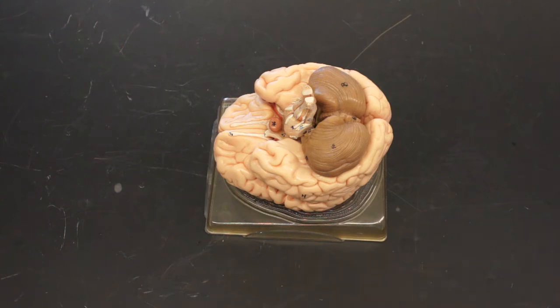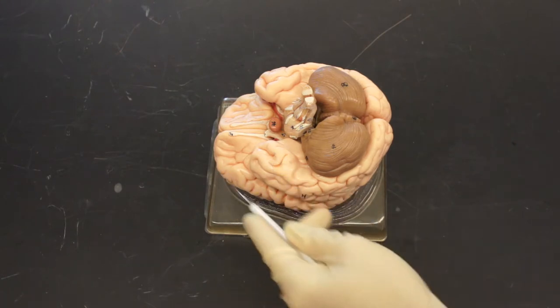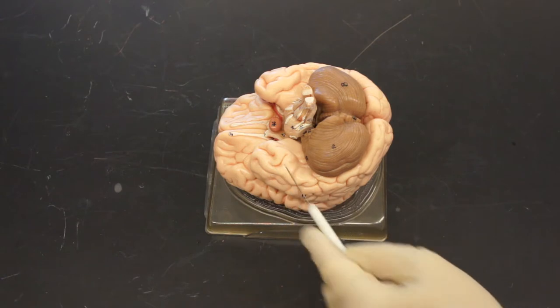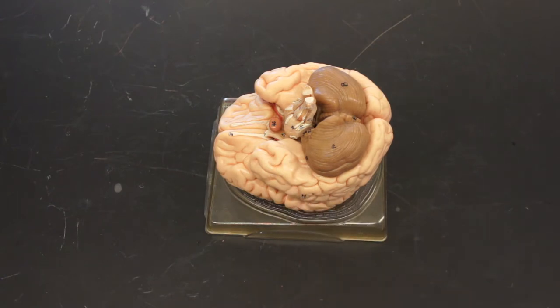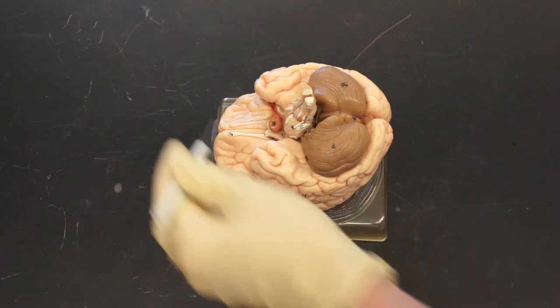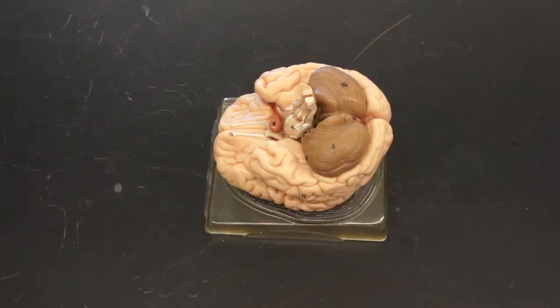Here we have a model of the brain, and we can see some bumps. Those bumps we call gyri, gyrus singular, and the grooves we call sulci, sulcus singular, and then fissures are deep grooves, and we'll talk about all those in a little bit.